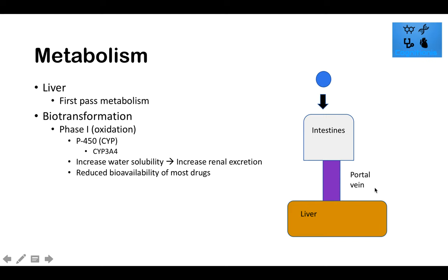When you give something IV, it doesn't go through first-pass metabolism — it goes right into the bloodstream. The exception is pro-drugs, which are actually activated when they undergo first-pass metabolism. Also, older patients typically have decreased Phase I biotransformation, so you may need to scale down the dose because they won't have as much reduced bioavailability after Phase I.